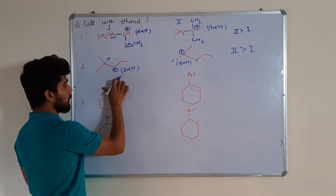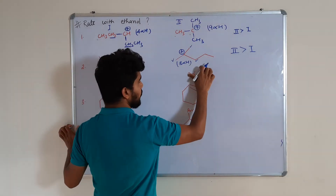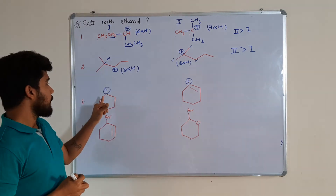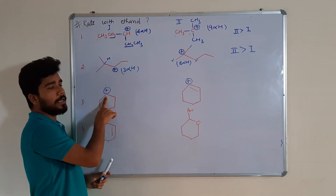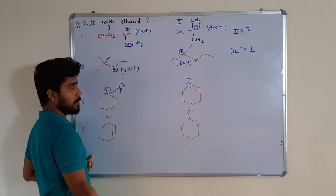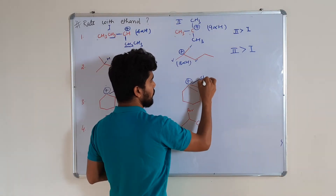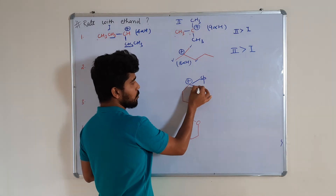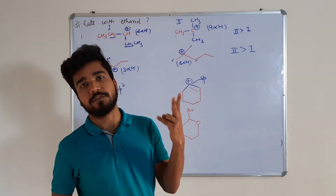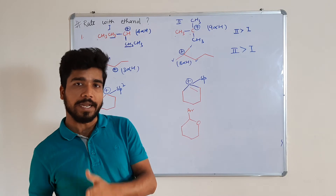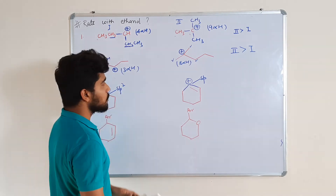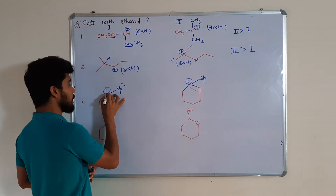Now the third question: the carbocation will be at this position in the first compound, and in the second compound the carbocation will be at this position. If we talk about the first carbocation, it is on a carbon which is sp2 hybridized. The second carbocation is on a carbon which is sp hybridized, because it has two sigma bonds and one pi bond with no third bond — only two hybrid orbitals are involved, formed from one s and one p orbital, giving two sp hybrid orbitals.